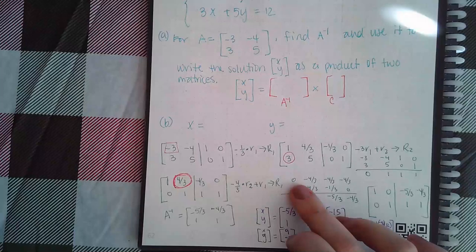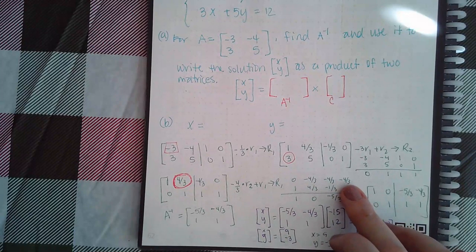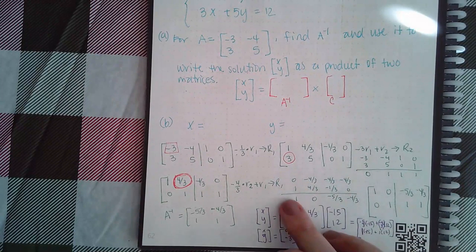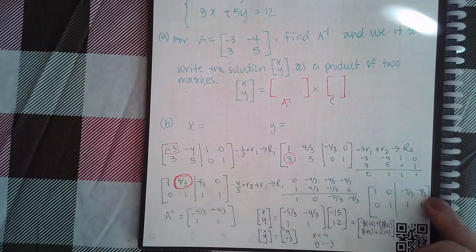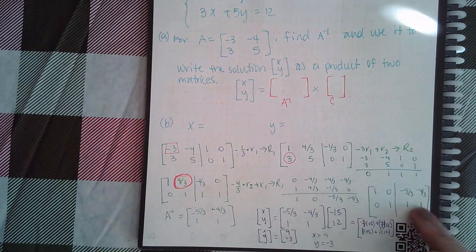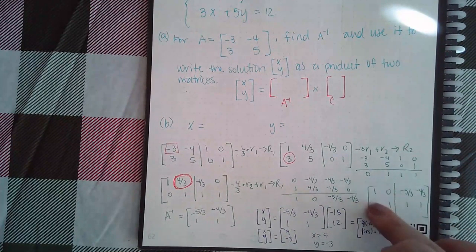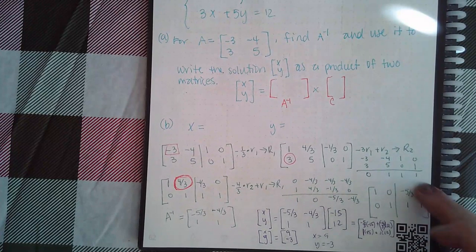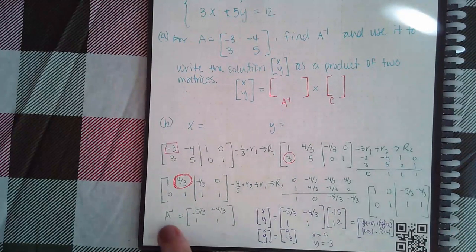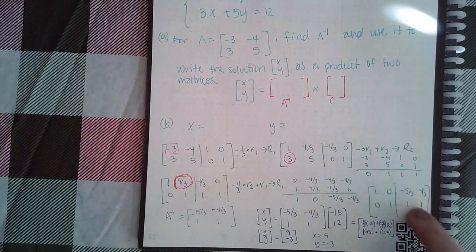So all of row two's items times negative four-thirds, all of row one's items, combined them together, and this became my new row one. Row two's already there. Since I now have the identity matrix, this is the inverse matrix. So the inverse is actually equal to this matrix here.